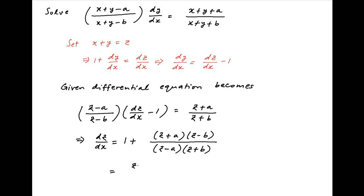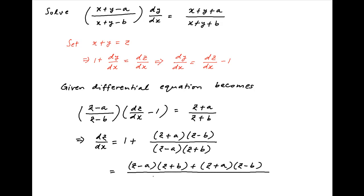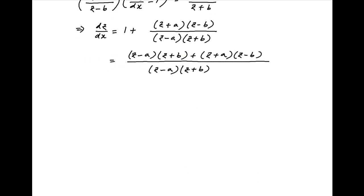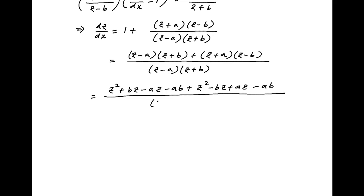The right hand side is equal to z minus a times z plus b plus z plus a times z minus b, divided by z minus a times z plus b. This is equal to z square plus bz minus az minus ab plus z square minus bz plus az minus ab divided by z minus a times z plus b. In the numerator, a couple of terms cancel out and therefore, the right hand side is equal to 2 times z square minus ab divided by z minus a times z plus b.